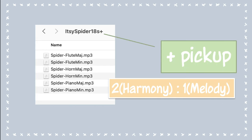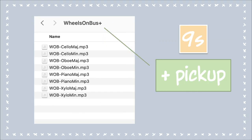If there's a plus sign, there is a pickup note. Itsy Bitsy Spider doesn't start directly — it goes 'the Itsy Bitsy,' so 'the' has to be accounted for. That's called a pickup. If it has a plus sign, it has a pickup, and I will create another video to help you understand how to work with that extra sound. It's 18 seconds long, meaning there are two harmonies to the one melody. Wheels on the Bus also has a pickup note — it's not 'wheels on the bus go round,' it's 'the wheels.' The 'the' is a pickup note and needs to be accounted for. The tune is nine seconds long.